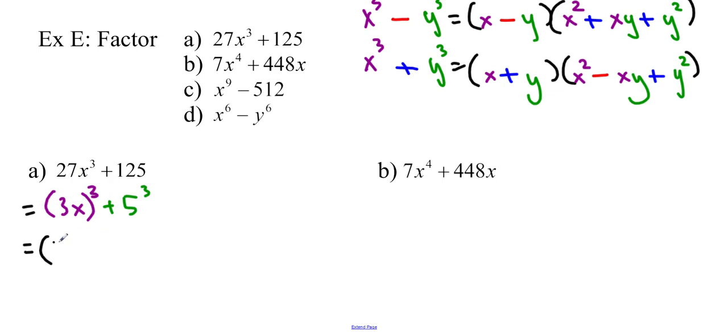So we get 3x, the first one plus the second one. Then the first one squared, don't forget to square the coefficient, minus the two of them multiplied together, 15x, plus the second one squared, so 25. And that's it. You can double check to see if this is factorable. If it's a quadratic, you can use the discriminant, b squared minus 4ac. In this case, it's not, so we're good to go.